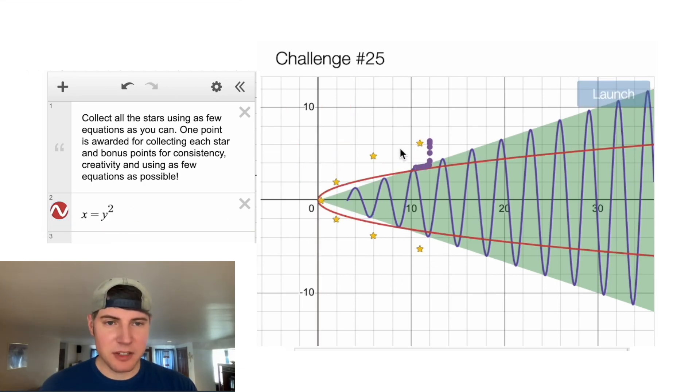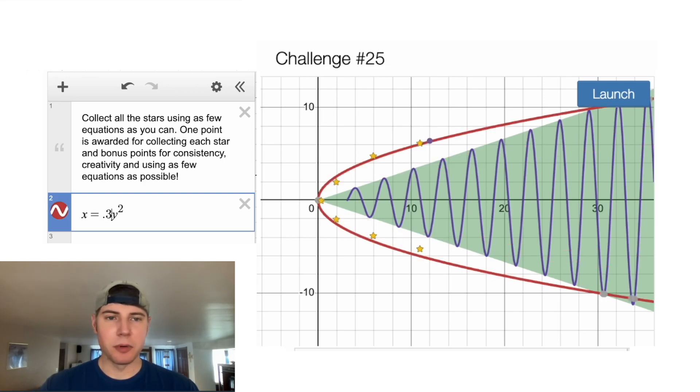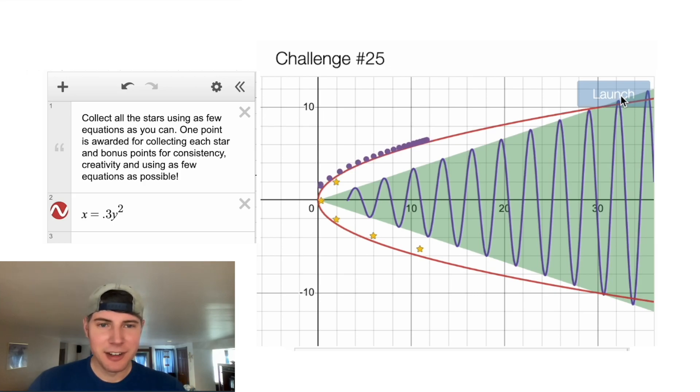We can see if we hit launch, it's going to miss these stars here. We need to make our parabola wider. We want to put a multiplier in front of here. Anything less than 1 will make it wider. So we try 0.6. That's not wide enough. Let's do 0.3. That looks pretty good. Let's hit launch. Perfect.